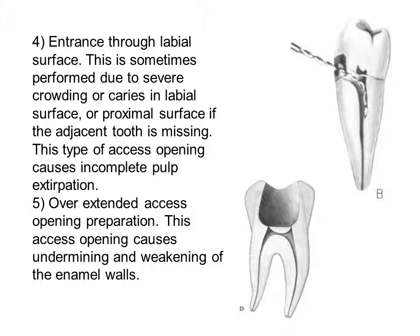Sometimes because of a tilted tooth, crowding, or caries on the labial or proximal surface, some dentists think about using the proximal surface for entrance to the pulp — that is wrong, because it does not provide a straight line for the instrument and may lead to ledging, instrument fracture, and remnant pulp tissue. Overextended access opening is also misleading because if the cavity walls are not continuous with the root canal walls, it will mislead the dentist and weaken the tooth structure, leaving an undermined enamel wall.